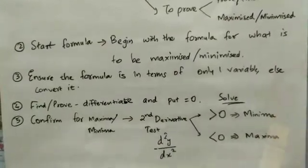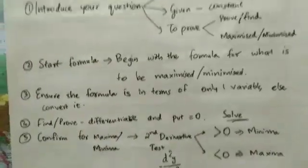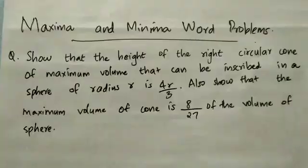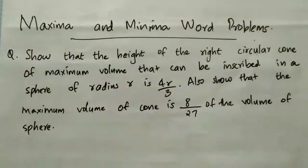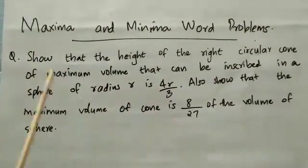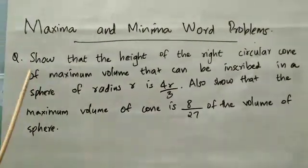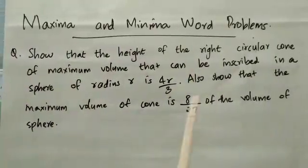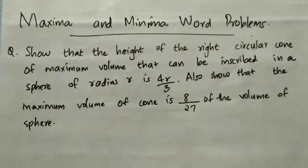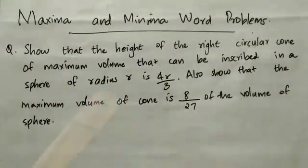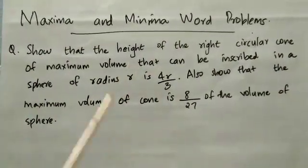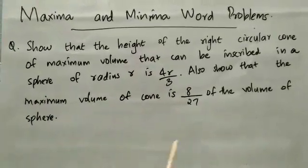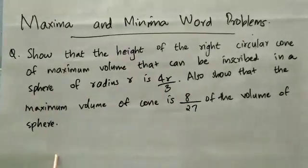We will confirm that the height of the right circular cone of maximum volume that can be inscribed in a sphere of radius r is 4r/3. Also show that the maximum volume of the cone is 8/27 of the volume of the sphere.